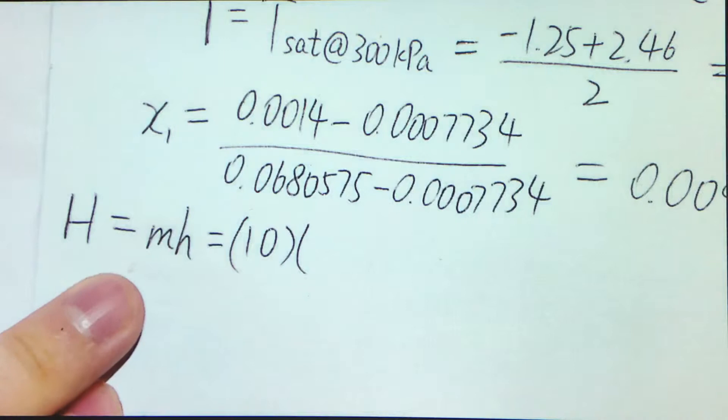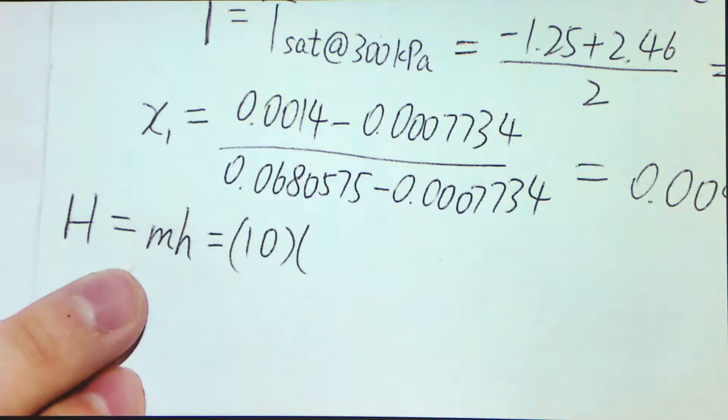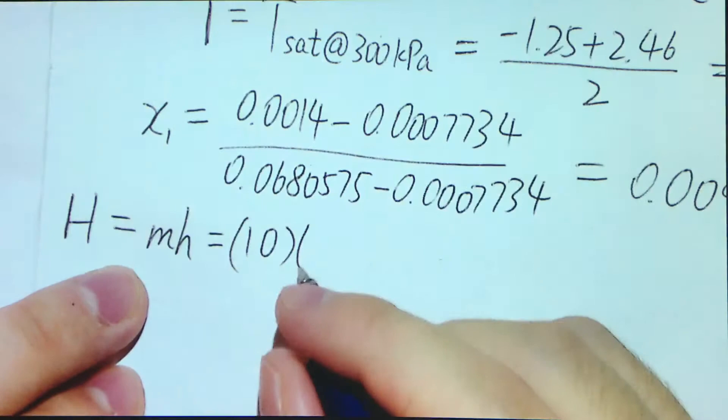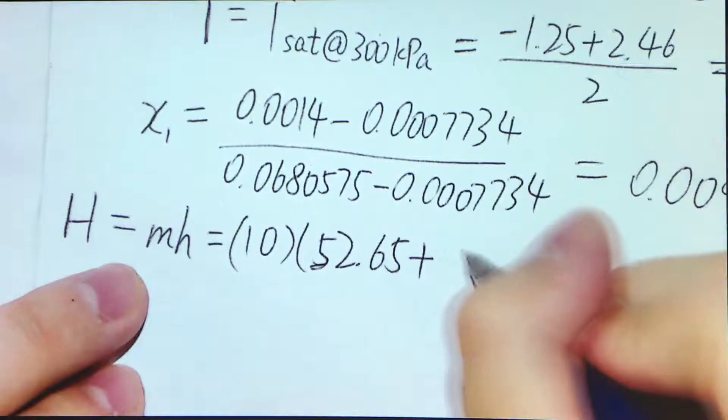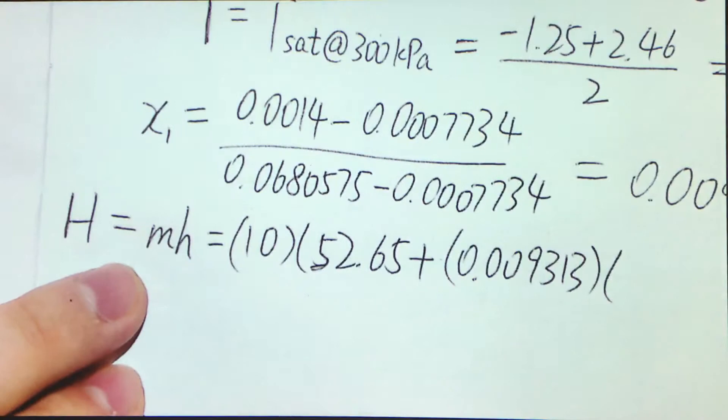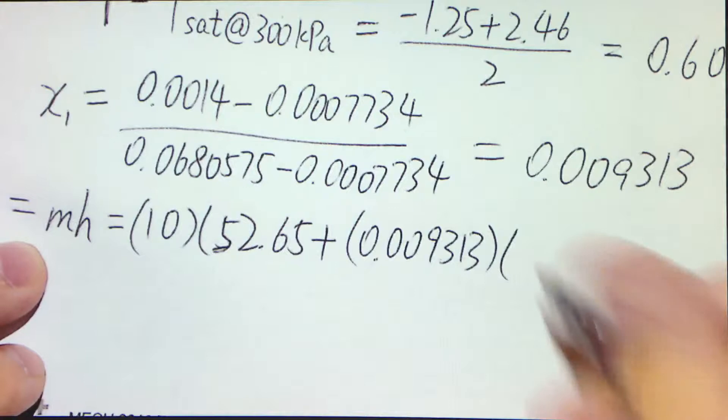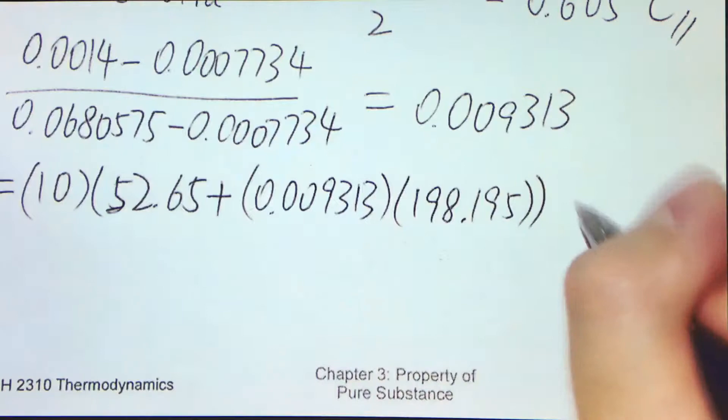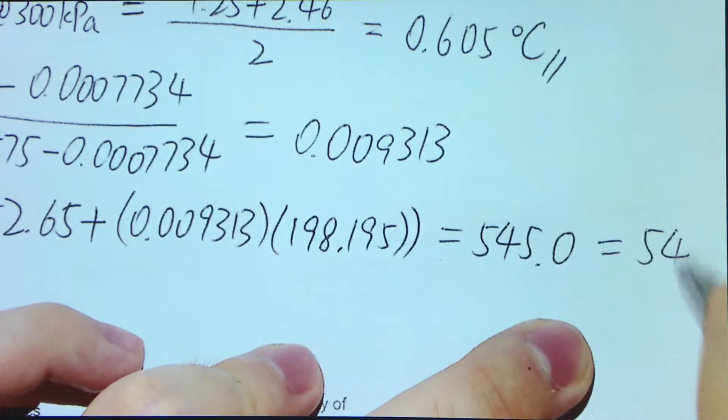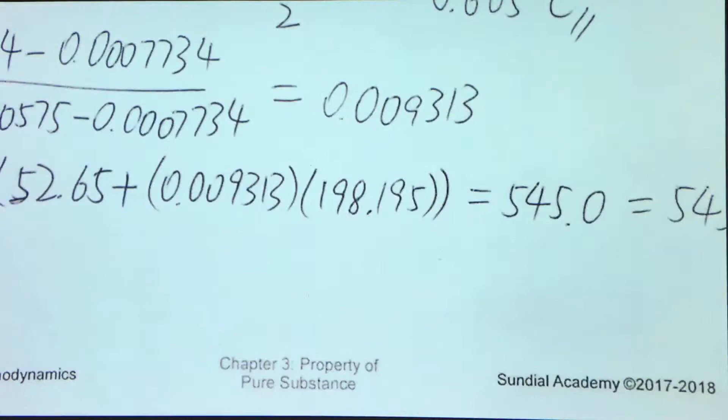How about the h? It's equal to hf plus X·hfg. So if you find out the table and use interpolation again, as I've mentioned, because 300 kilopascal is just the midpoint of 280 and 320, you get the hf at 280 and 320 respectively, and then you just add them up, divide by 2, and that's fine. So after interpolation, then you get 52.65 plus the quality multiplied by the hfg. We can find that directly for 280 and 320, and we just add them up, divide by 2 to get this one, 198.195. So this one is equal to 545.0 kilojoules, or we take three significant figures. So this is our answer, 545 kilojoules.